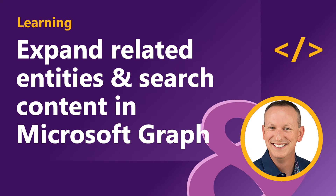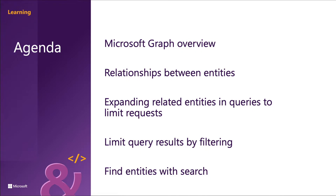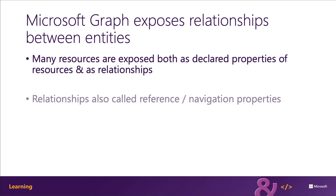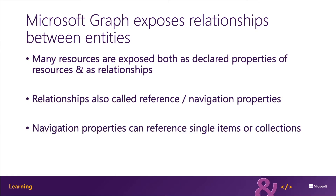In this section, we're going to explore how you can use two query parameters to search and include related data in Microsoft Graph requests. Many Microsoft Graph resources expose both declared properties of the resource and its relationships with other resources. These relationships are also called reference properties or navigation properties, and they can reference either a single resource or a collection of resources.